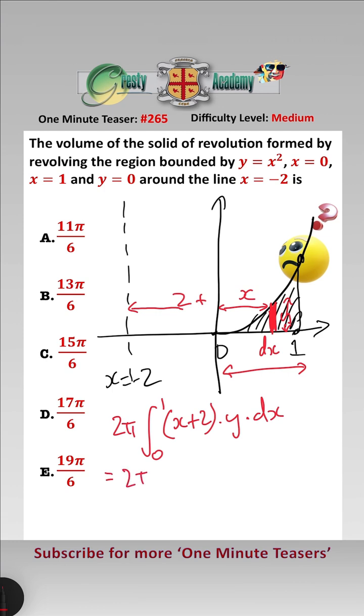And that equals 2 pi, the integral between 0 and 1 of x cubed, add 2x squared dx, because y is equal to x squared. And that equals 2 pi,